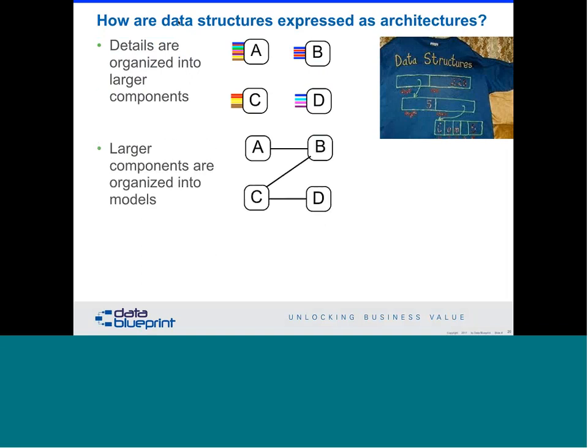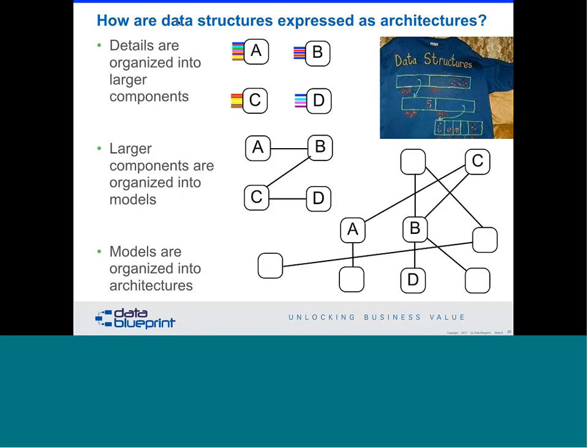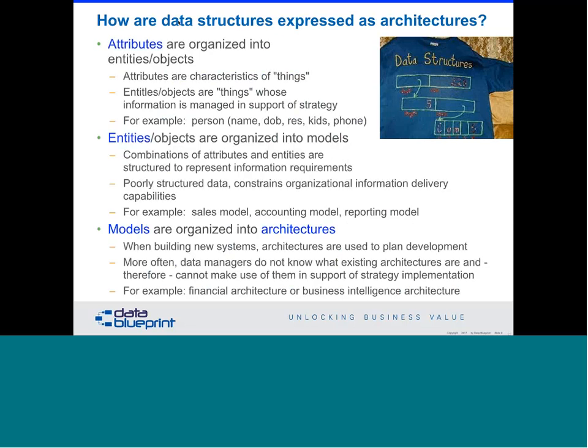Our data structures are typically expressed as architectures. We start with our details — customers, invoices those customers generate, vendors, and payments out to those vendors. When those data structures are in place, we pull it together into slightly larger scenarios like models. This typically takes the form of an application — an accounting application, a sales application, or a marketing application. Those get brought together into a larger architecture where you pull the various applications together to meet a larger need. On the data structure side, we have attributes that we organize into entities and objects — a person, a patient, or an employee — with attributes such as name, date of birth, residence, number of children, or phone number.